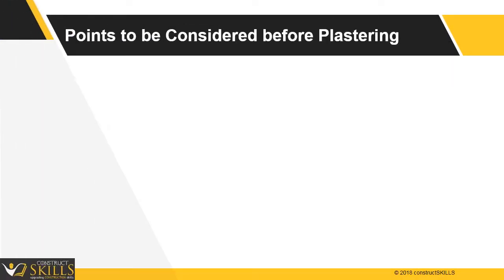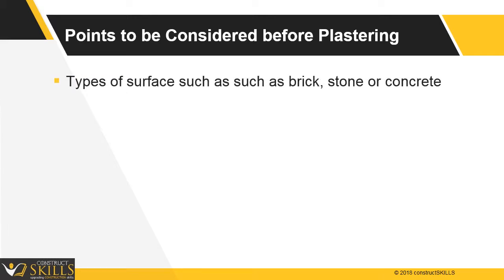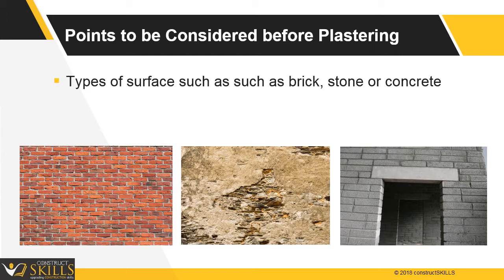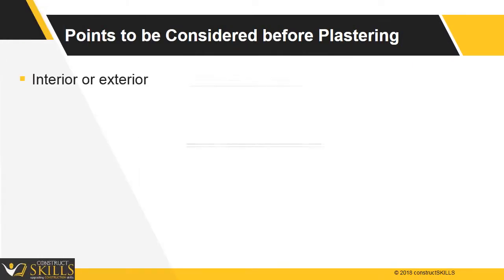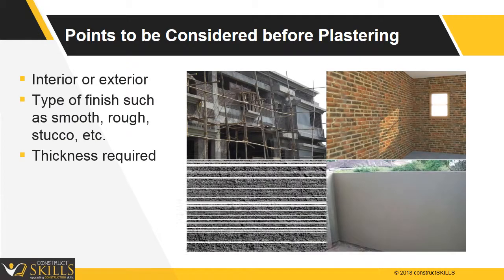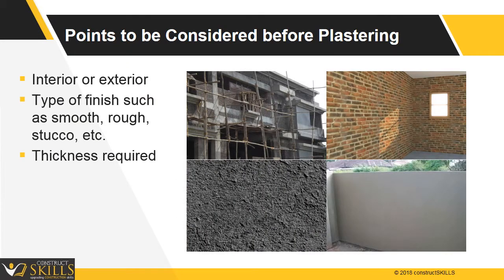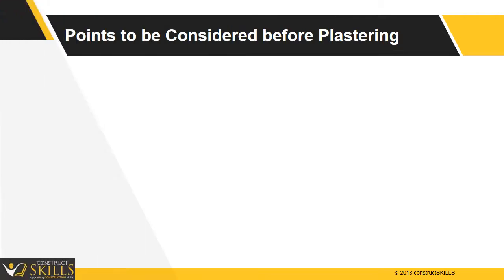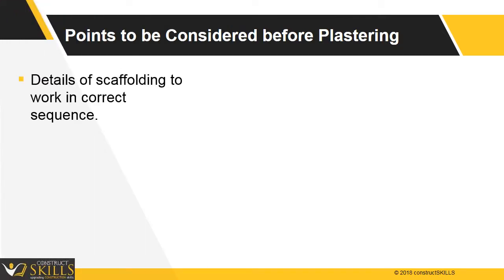The following points should be considered and planned before any plaster work begins: the type of surface plaster is to be applied on, so that necessary preparations before plastering can be minimized; the area, type of finish, and thickness required so that the mix design can be planned appropriately; and details of scaffolding to work in correct sequence, particularly for ceiling and height work.